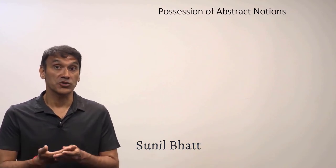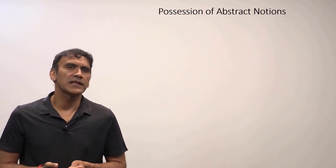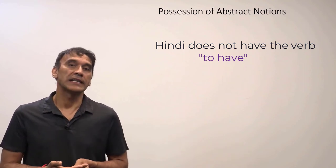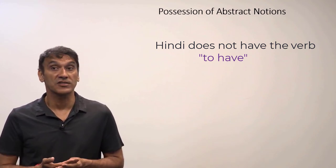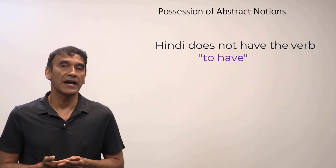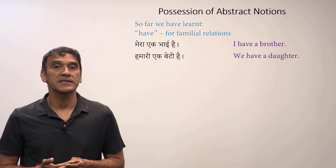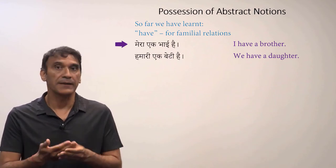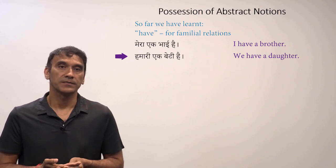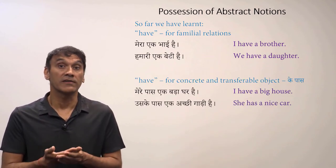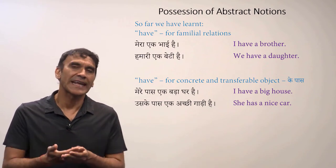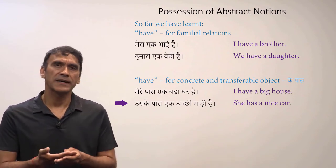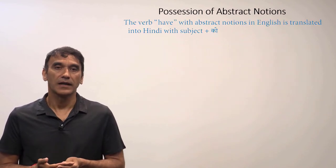The next grammar point is possession of abstract nouns. In previous grammar points we learned how to express the verb 'have' with different types of possessions. As you know, Hindi does not have the verb 'have' and possession is expressed with different types of sentence construction depending on what is being possessed. We learned how to express 'have' for familial relations — Hindi uses possessive pronouns — and also for concrete and transferable objects, where the postposition 'ke paas' is used, as in 'I have a big house' or 'she has a nice car.'